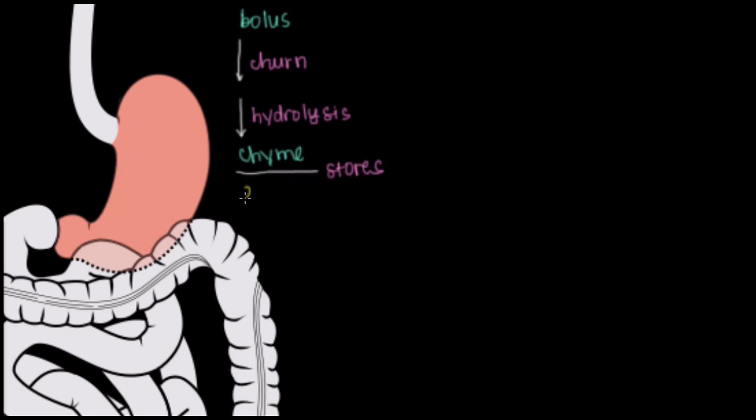And that's why we can store up to two to four liters of food at any given time. Now, what about the anatomy of the stomach here? How do we release these enzymes and break down this bolus?